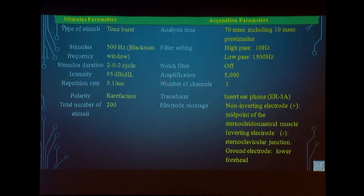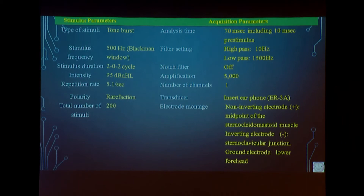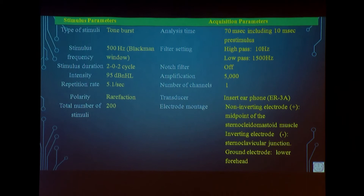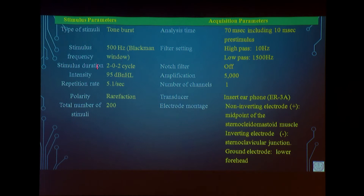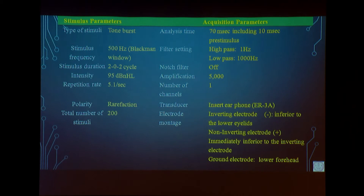Recording parameters for cervical VEMP use a 500 Hz tone burst stimulus at a very high intensity of 95 dB NHL. The recording protocol for cVEMP and oVEMP is essentially the same — there are only two differences: the electrode montage and the filter settings.